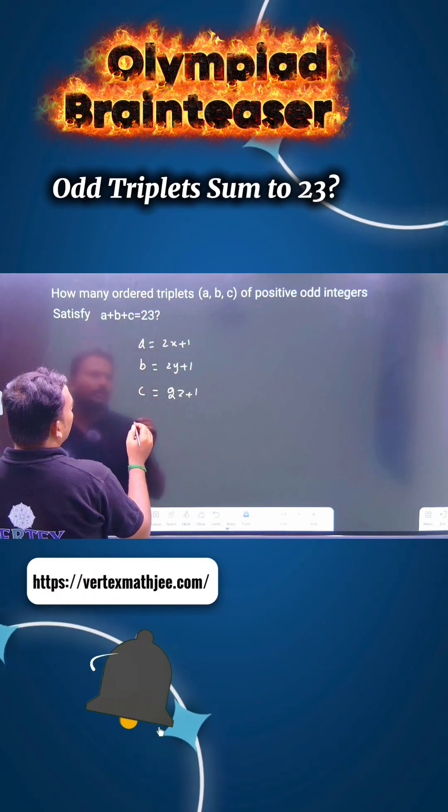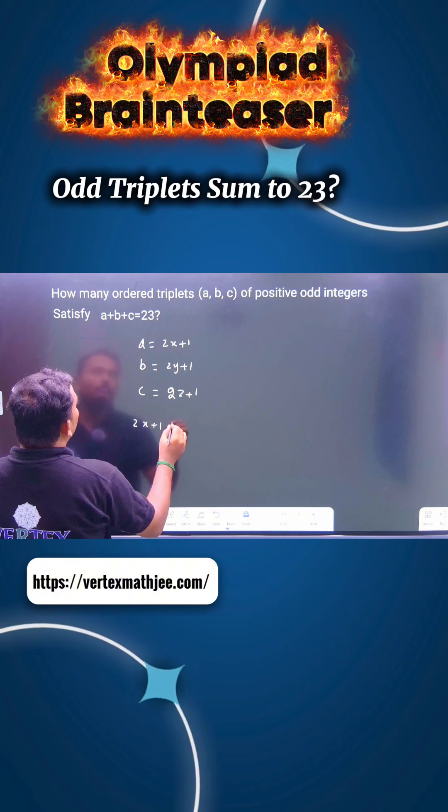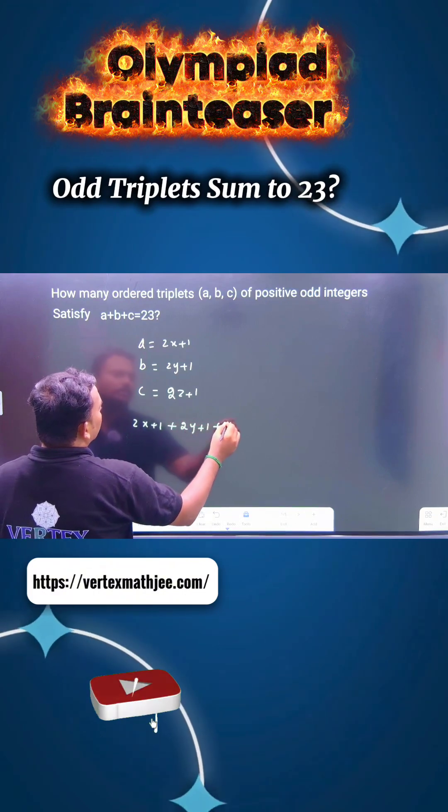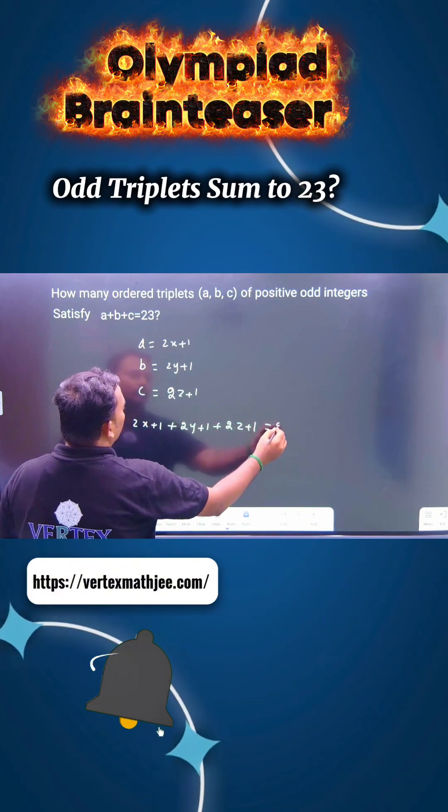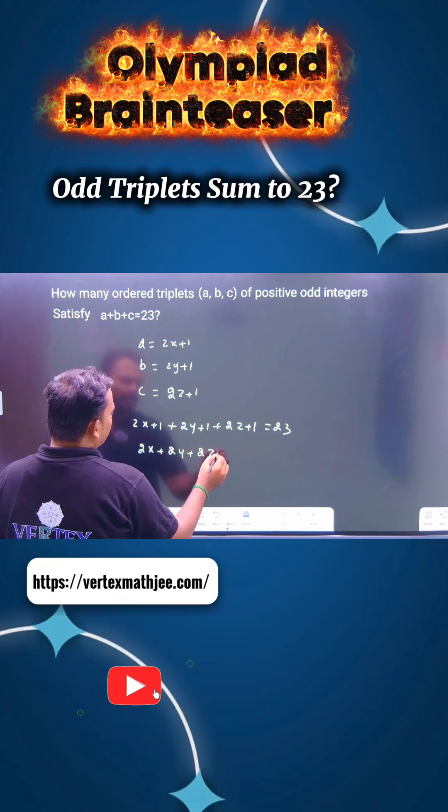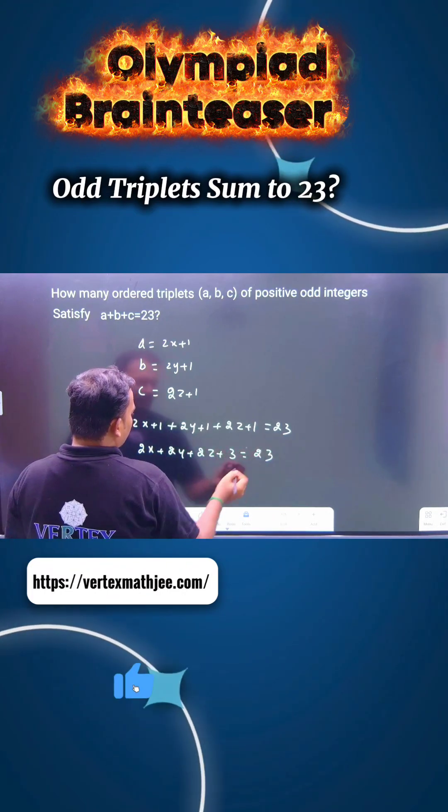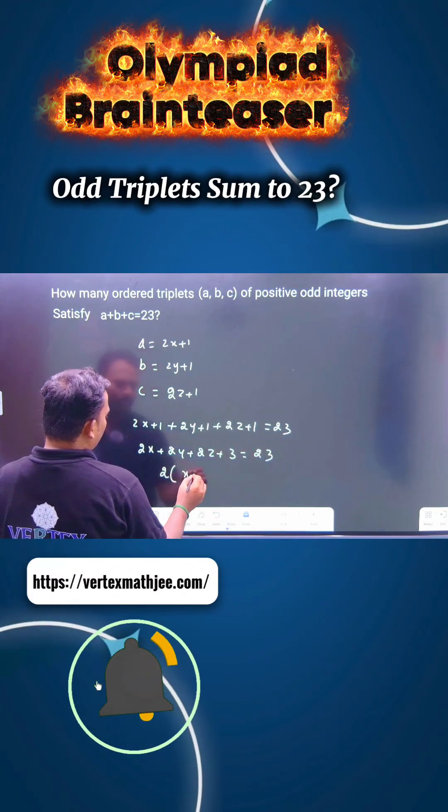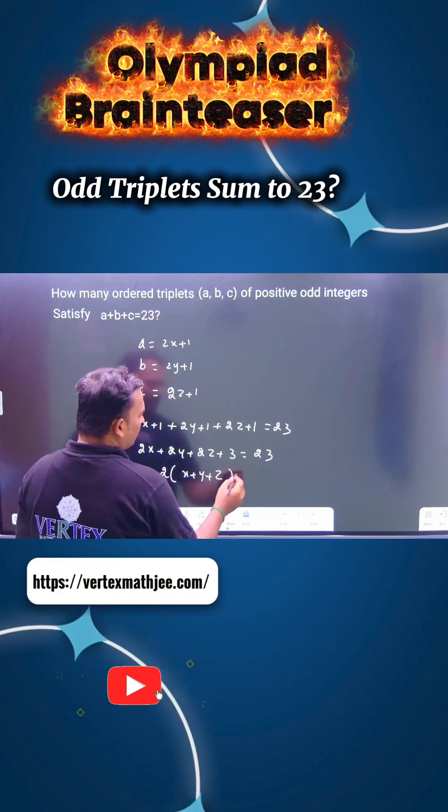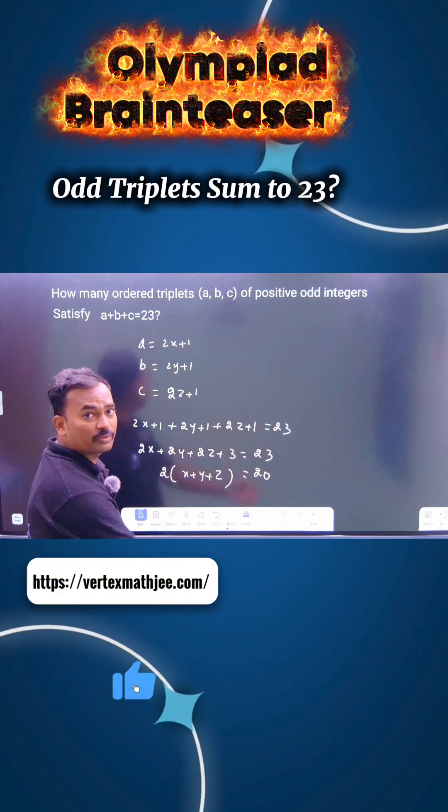You can substitute into the equation. 2x plus 1 plus 2y plus 1 plus 2z plus 1 equals 23. 2x plus 2y plus 2z plus 3 equals 23. Therefore, take 2 common: 2 times x plus y plus z equals 20.